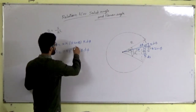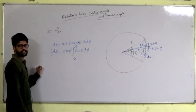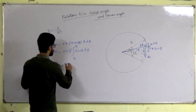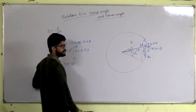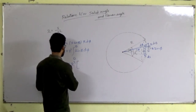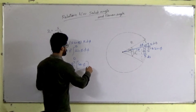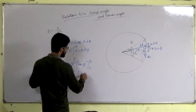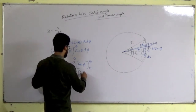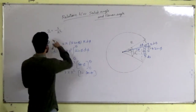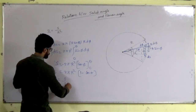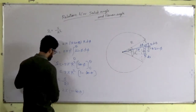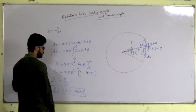Now integrate from 0 to theta. The net area integrates to 2πR² times [−cos(phi)] from 0 to theta, giving 2πR²(1 − cos θ). So omega = S/R² = 2π(1 − cos θ). We now have the solid angle and planar angle relation — it is very straightforward.